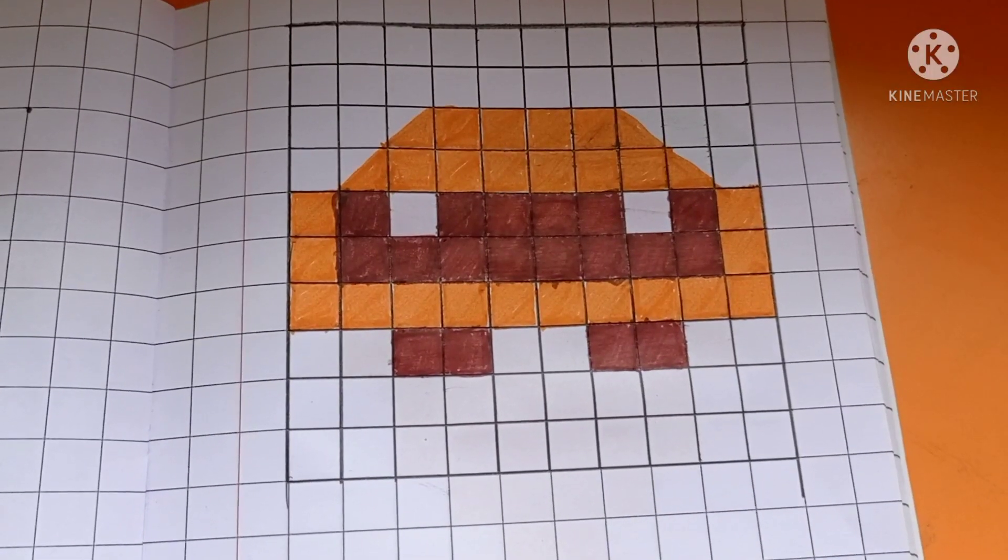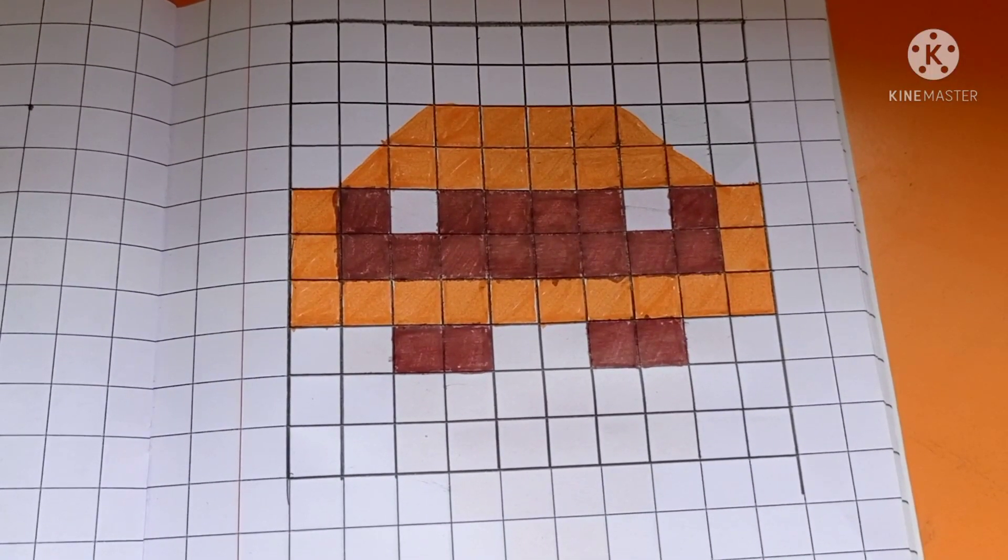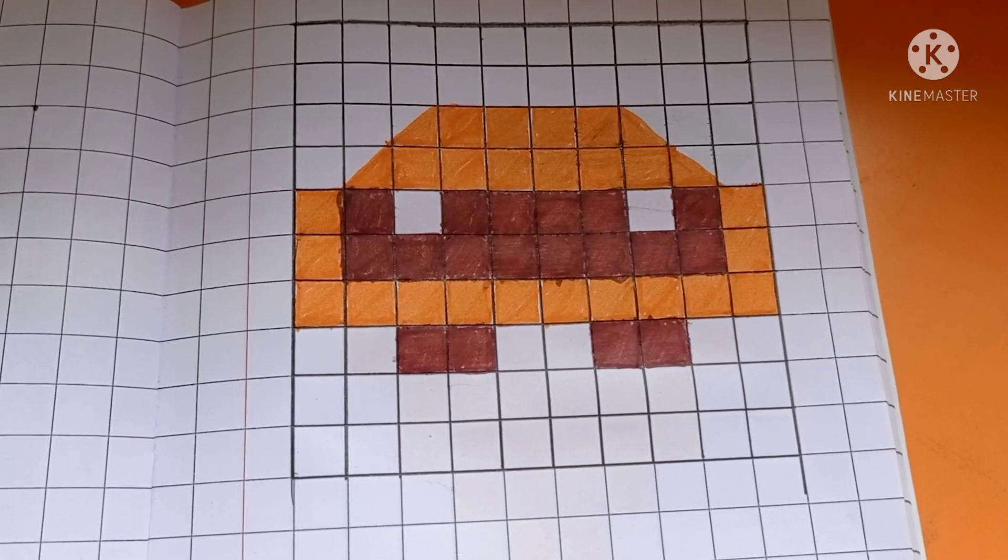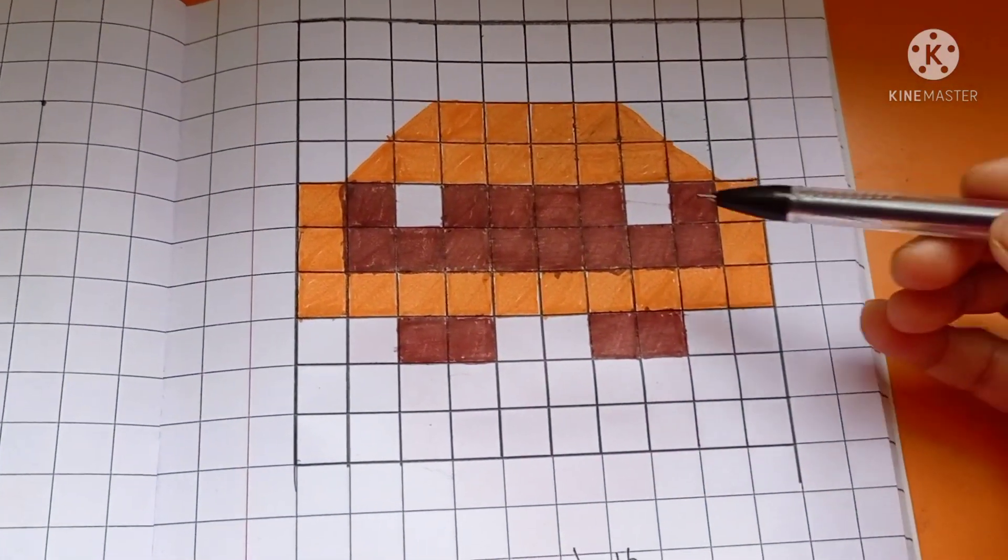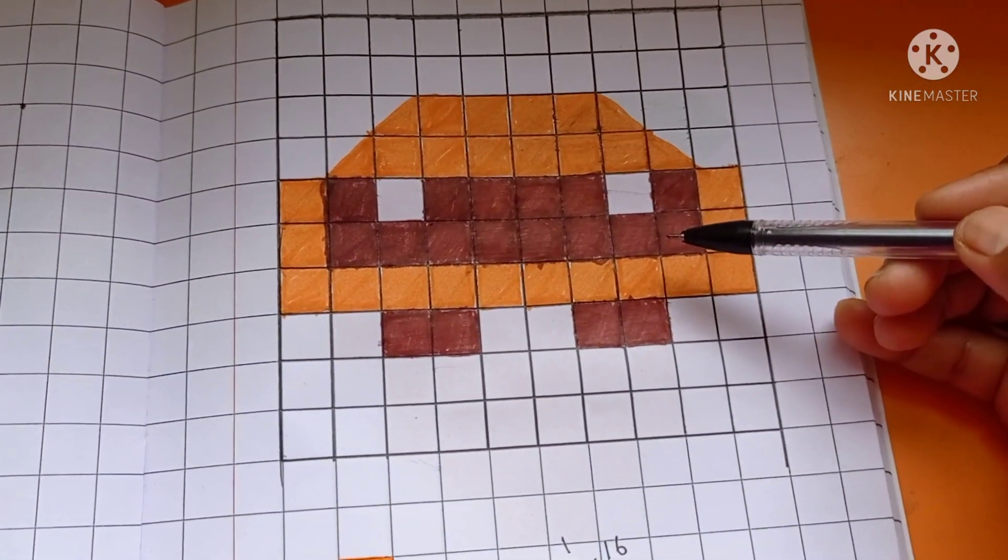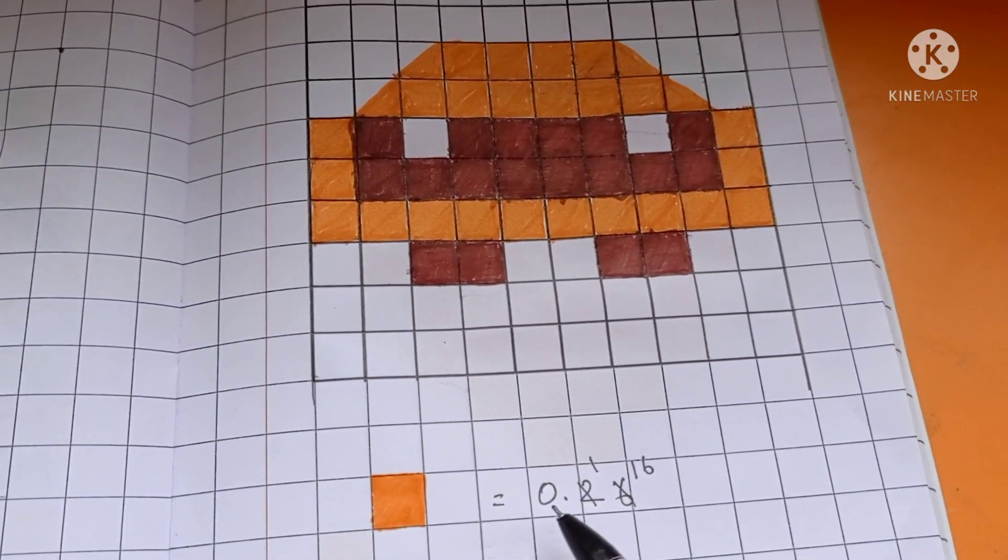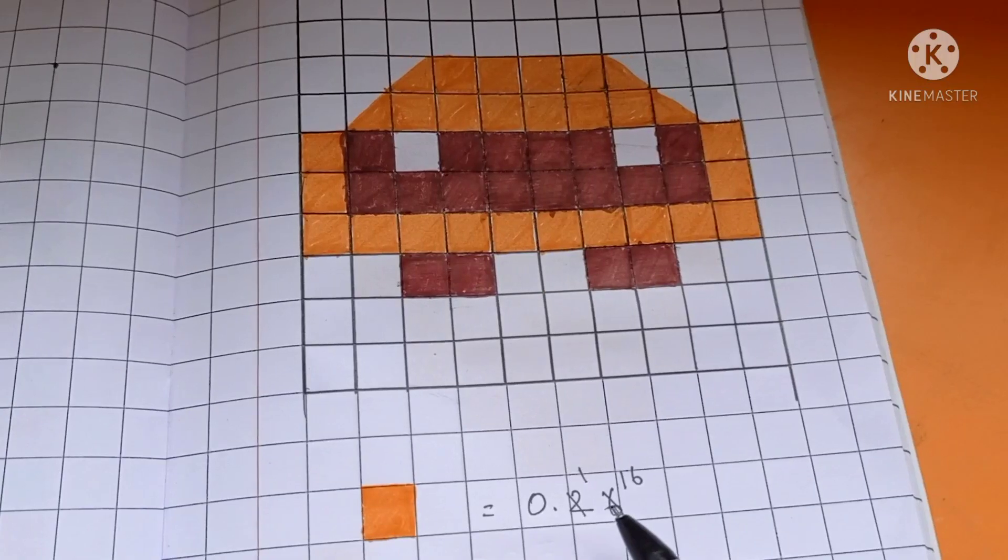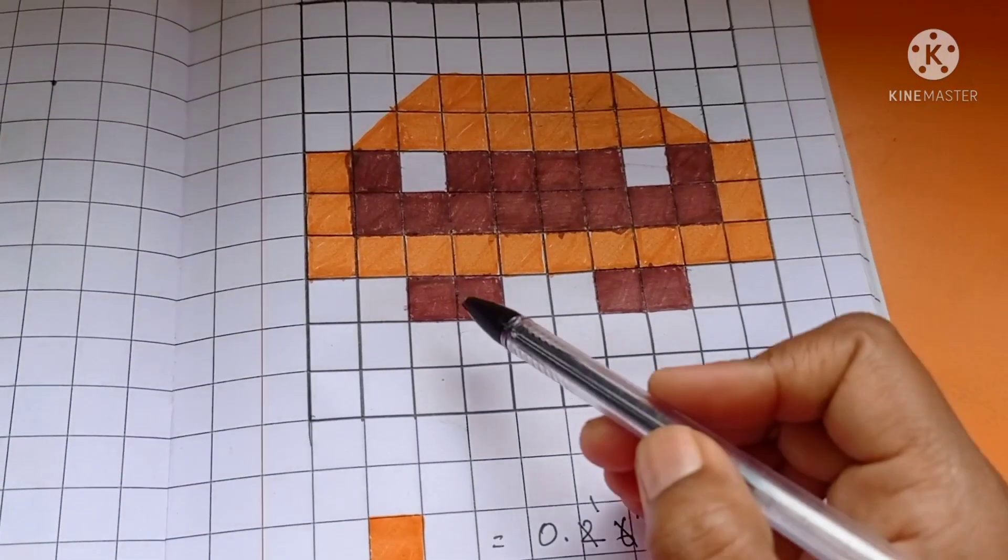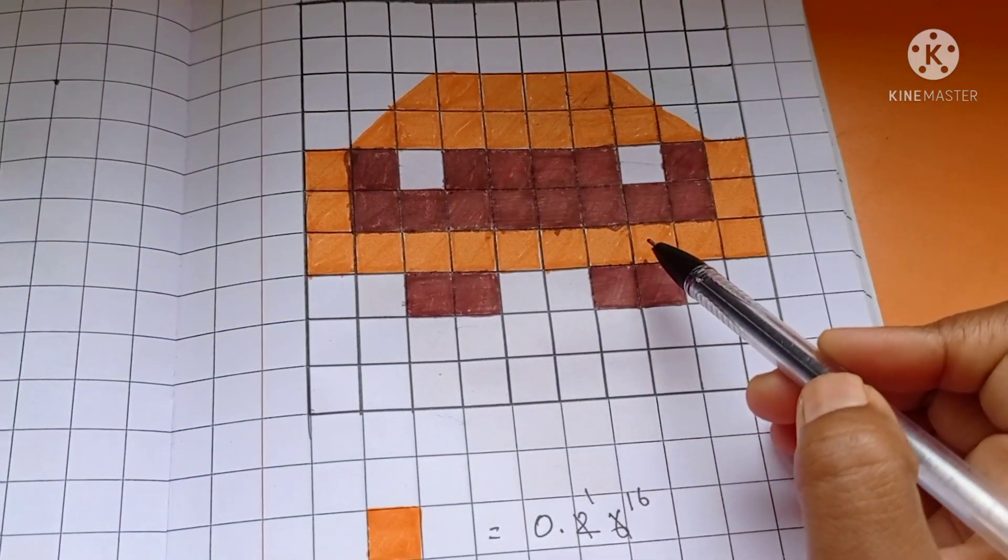Let's see subtraction operation. Write the decimal number for orange color and the brown color. Here, orange color decimal is 0.26, total number of parts colored in orange 26.